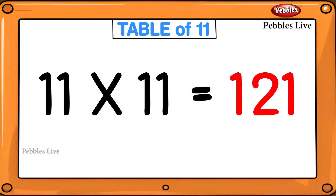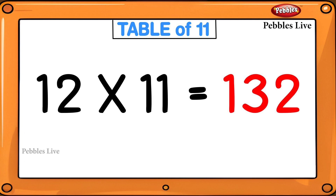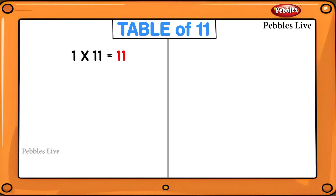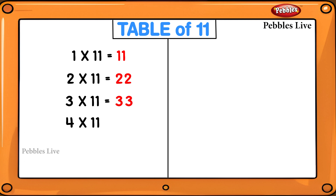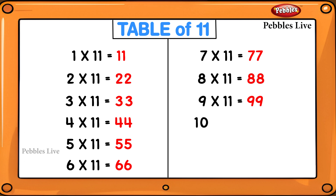11 elevens are 121, 12 elevens are 132. 1 elevens are 11, 2 elevens are 22, 3 elevens are 33, 4 elevens are 44, 5 elevens are 55, 6 elevens are 66, 7 elevens are 77, 8 elevens are 88, 9 elevens are 99, 10 elevens are 110, 11 elevens are 121, 12 elevens are 132.